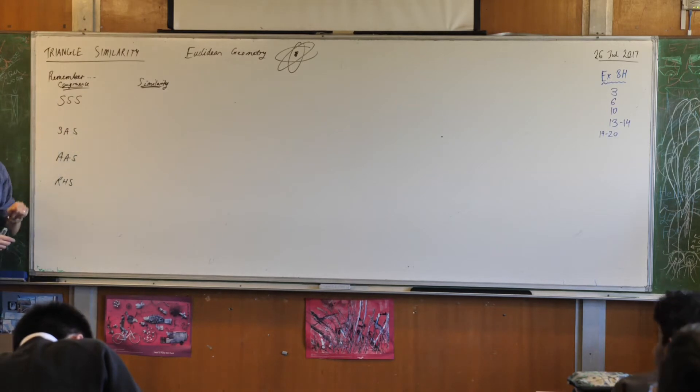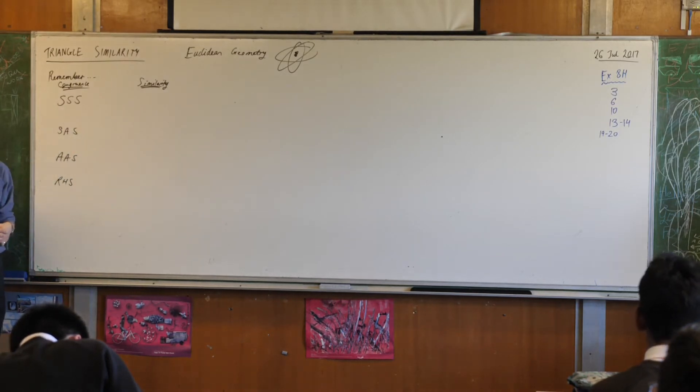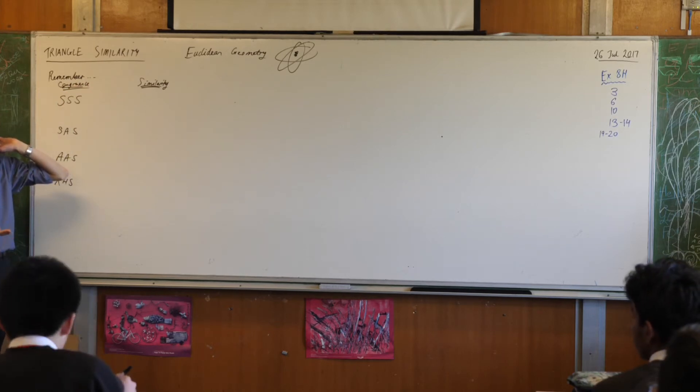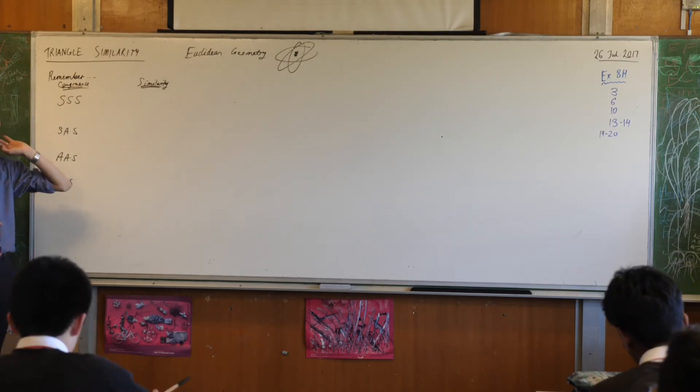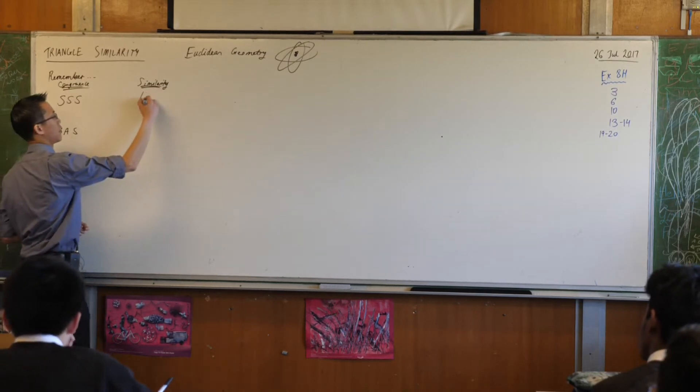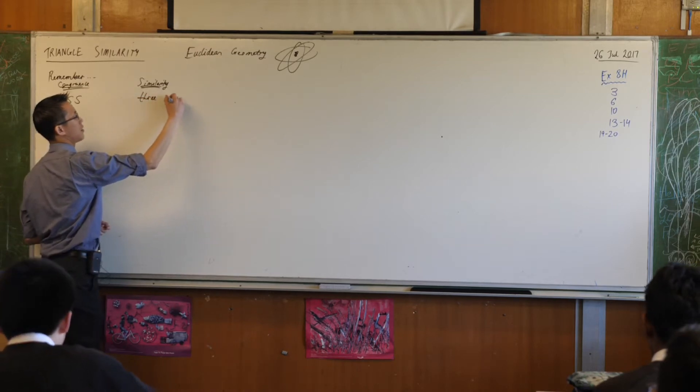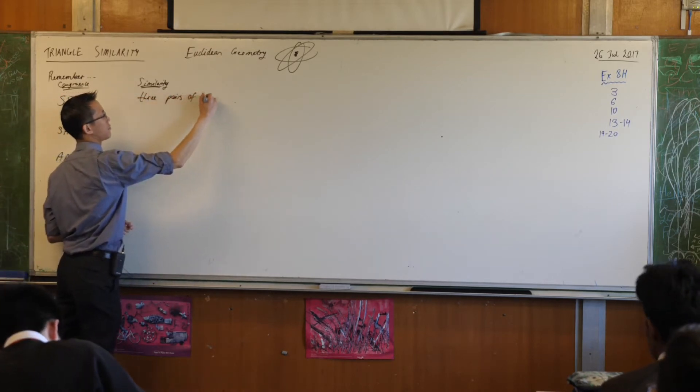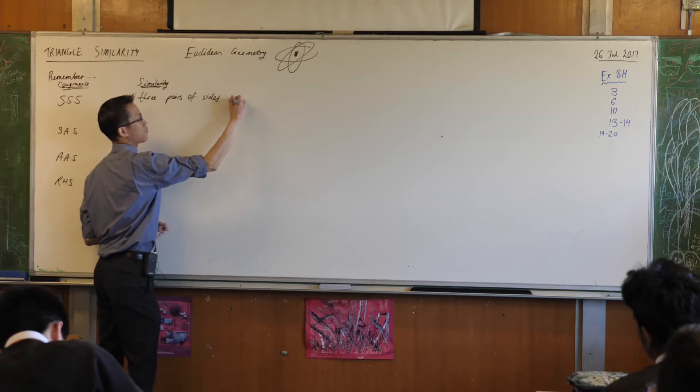Three pairs of sides equal and you've got congruence of triangles. But for similarity, we want three pairs of sides not equal but in ratio. Or you really should say in the same ratio or in proportion. So here's the way that I say it: three pairs of sides in proportion.